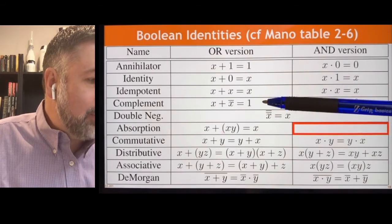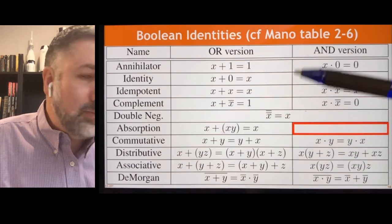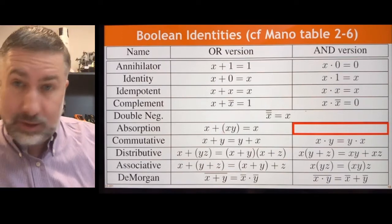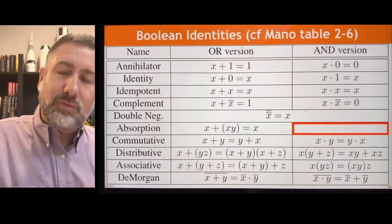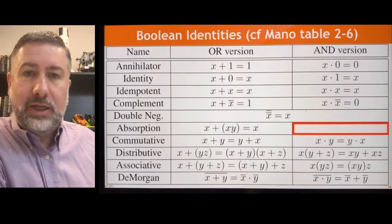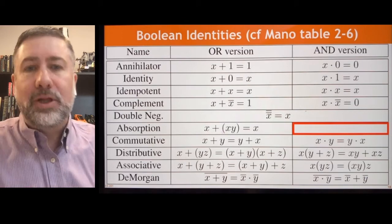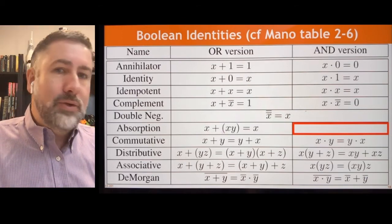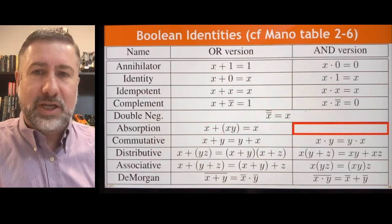So we have annihilator, identity, idempotent, complement, double negative, absorption, commutative, distributive, associative, and de Morgan. All of these rules you can just invoke as they are. But I could, in an assignment, ask you to prove any of these rules. And then in that case, you would have to prove the rule using all the other rules. So we just sort of proved absorption using distribution and annihilator. So that's an example of proving a rule using the other rules that are there. So that's an example then in general of simplification. They're going to have a lot more interesting simplification problems. That one was pretty straightforward.